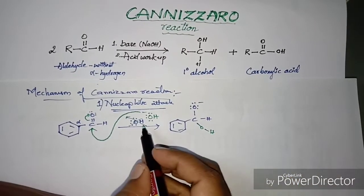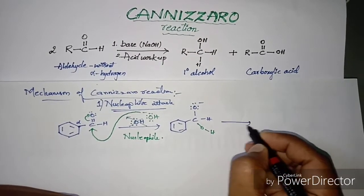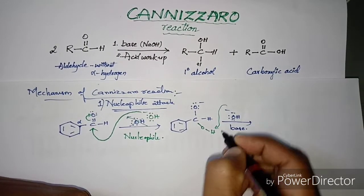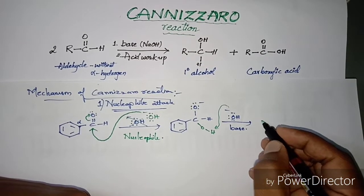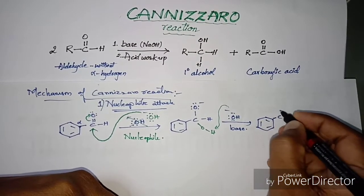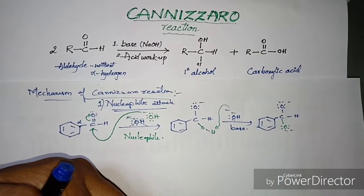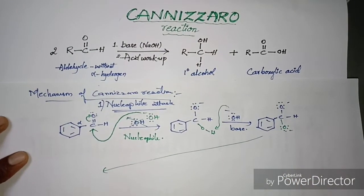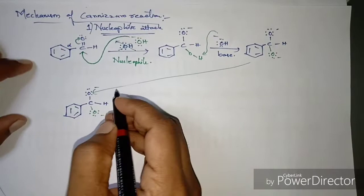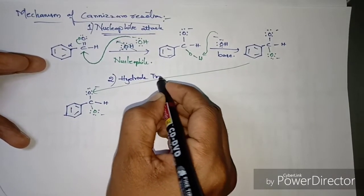While OH⁻ acted as a nucleophile in the first step, in the second step one more molecule of OH⁻ acts as a base. Its electrons reach up to the proton, so deprotonation takes place. As a result, the diionized form of the species is produced, which marks the end of the first stage and initiates the second step of the Cannizzaro reaction mechanism.